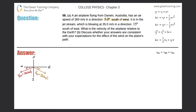Number 58, letter A. A jet airplane is flying from Darwin, Australia with an air speed of 260 meters per second in a direction five degrees south of west. It is in the jet stream which is blowing at 35 meters per second in a direction 15 degrees south of east. What is the velocity of the airplane relative to the earth? Anytime they ask questions about relative velocities, we really have to define what all the given velocities are in relation to.